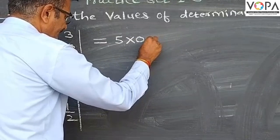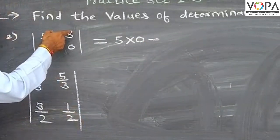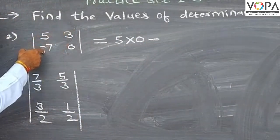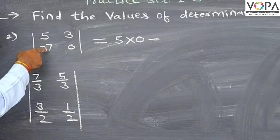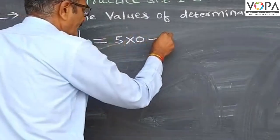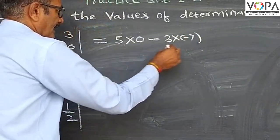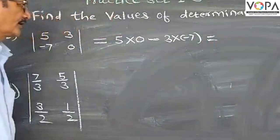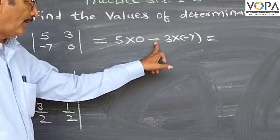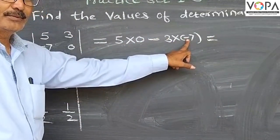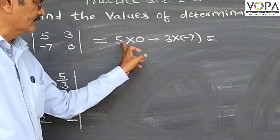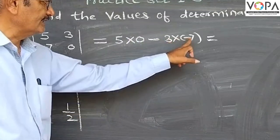3 multiply by minus 7 is equal to... 0 minus and minus, plus 0 plus 3 times 7... 0 plus 21 is equal to 21.